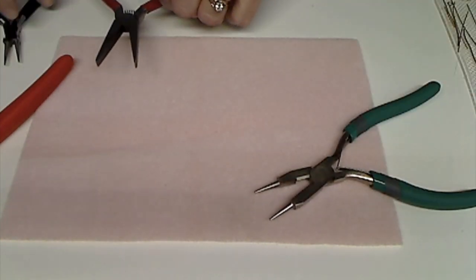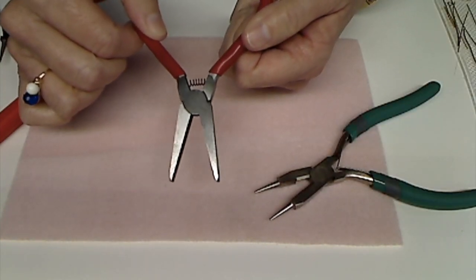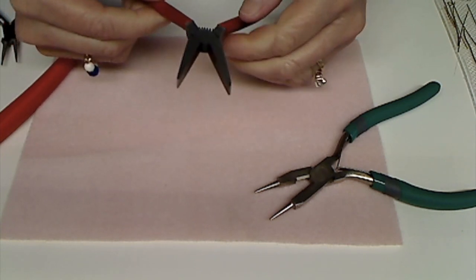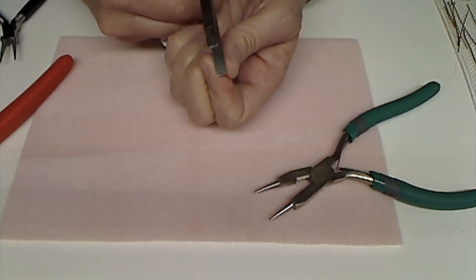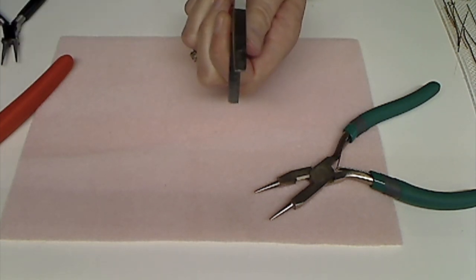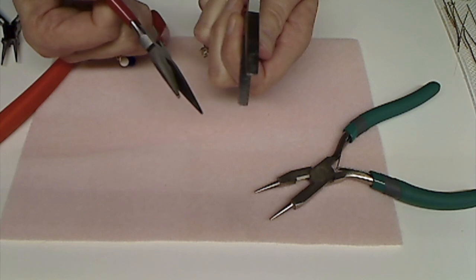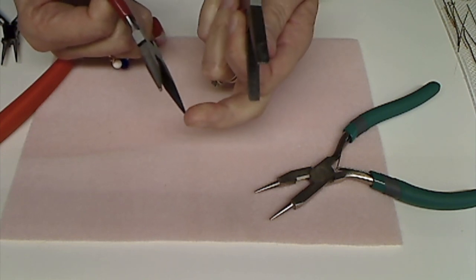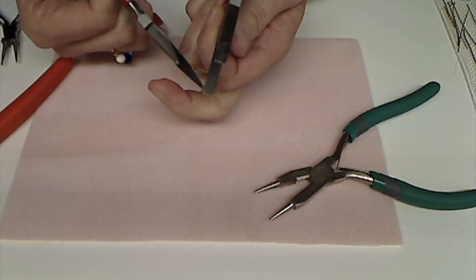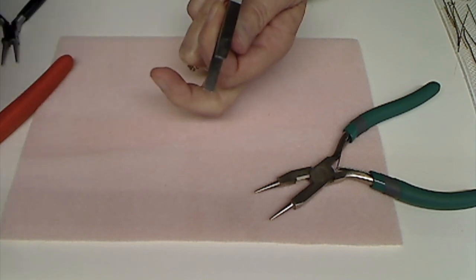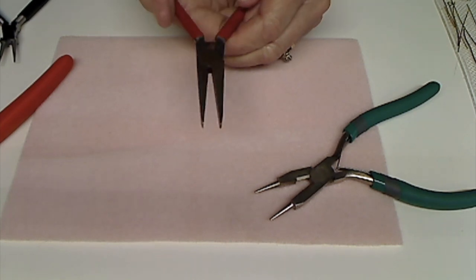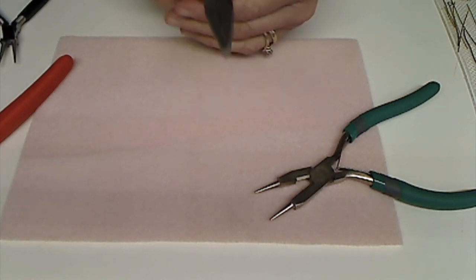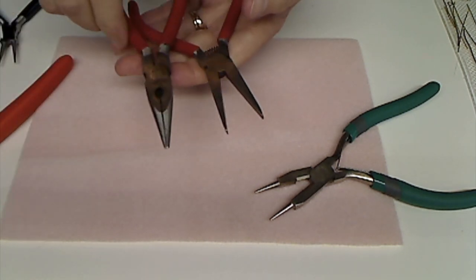So you've got a cutter, you've got a flat jaw, and you've got a round jaw on those pliers. The second thing you're going to need or tool that you're going to need is flat nose pliers. And I like the flat nose. They also come in something called needle nose.